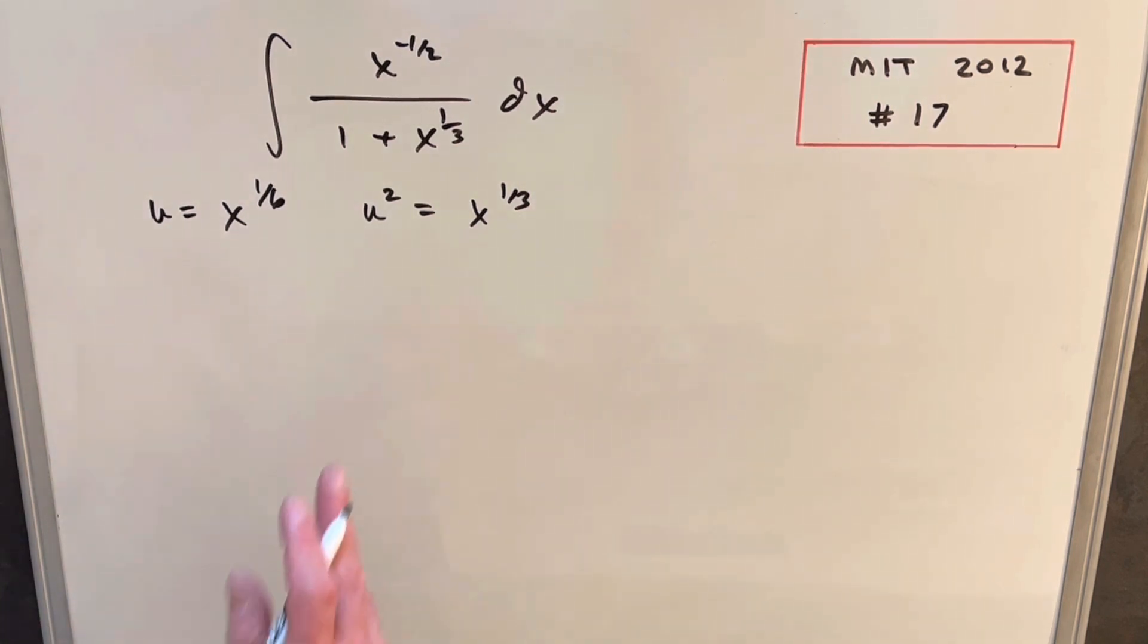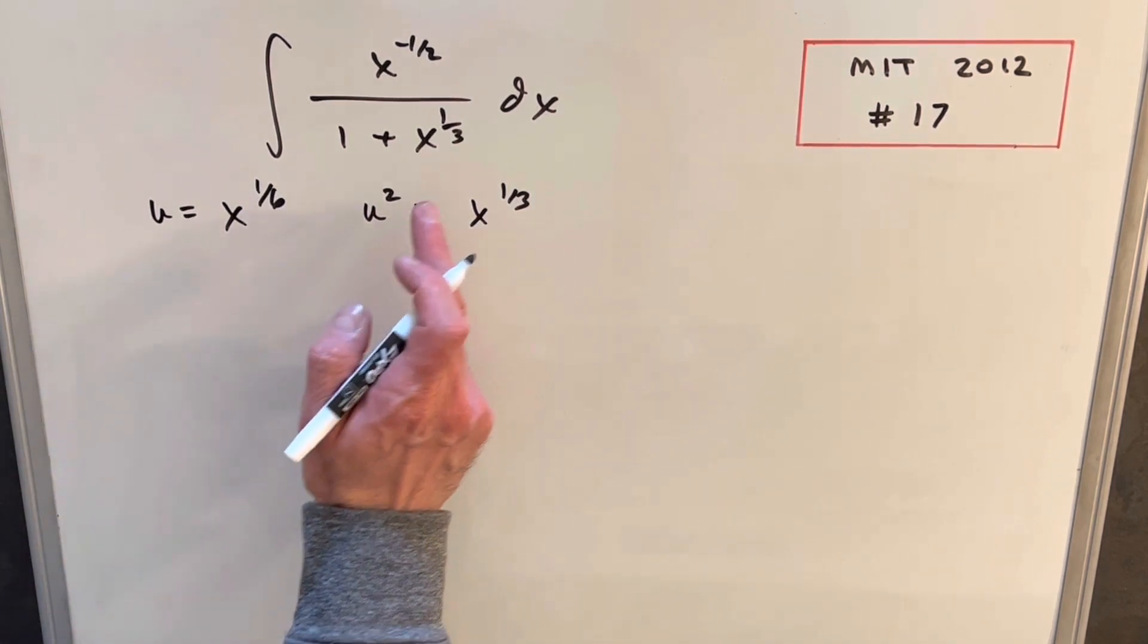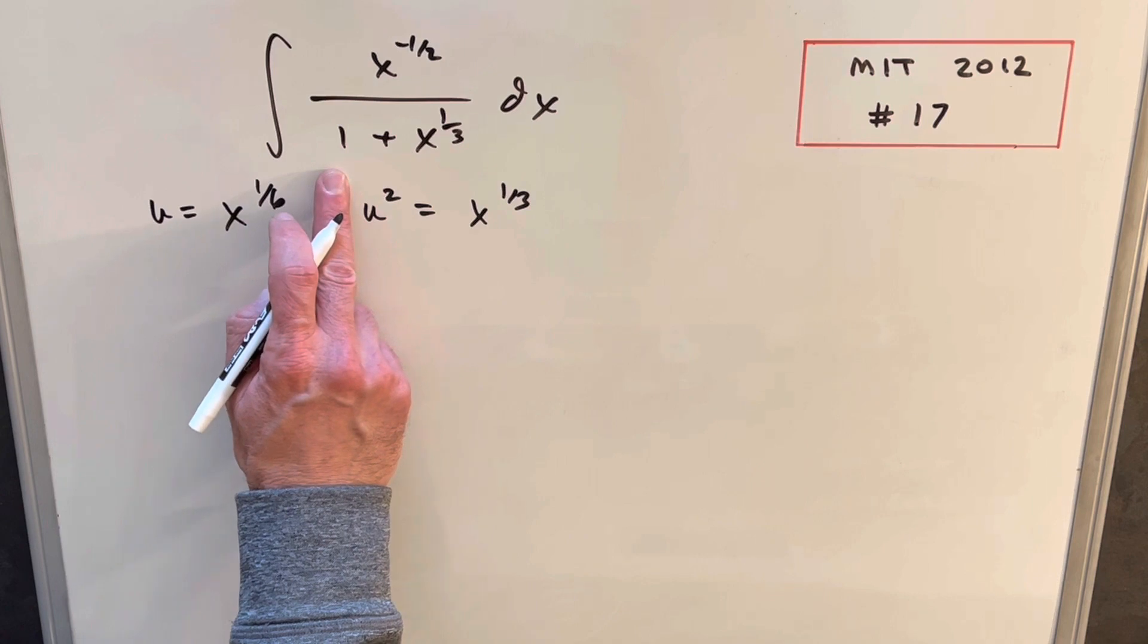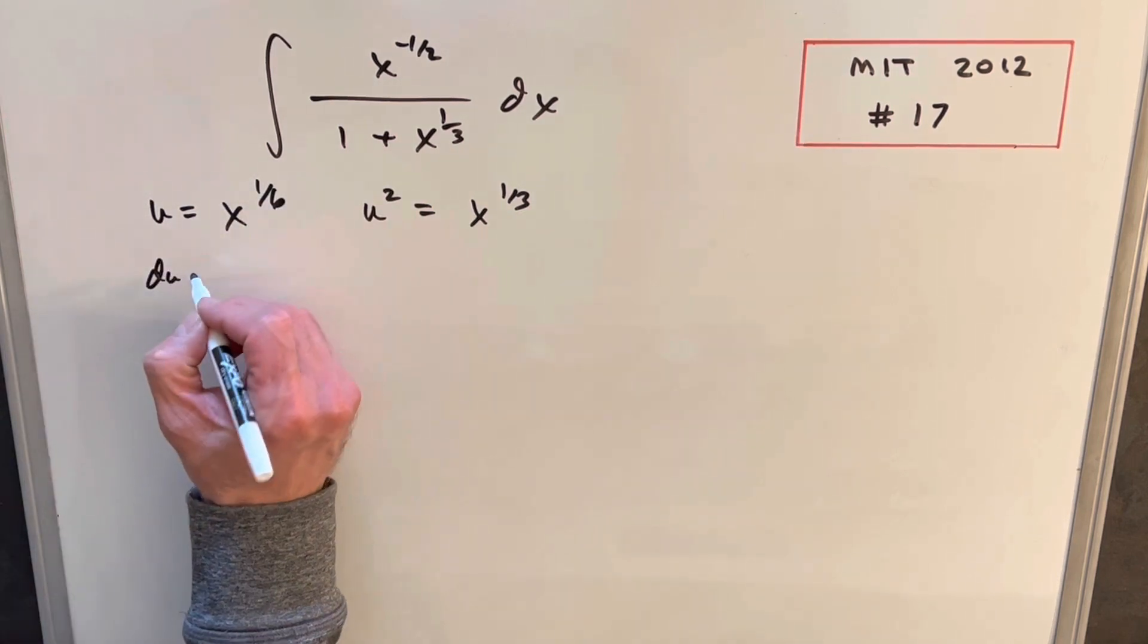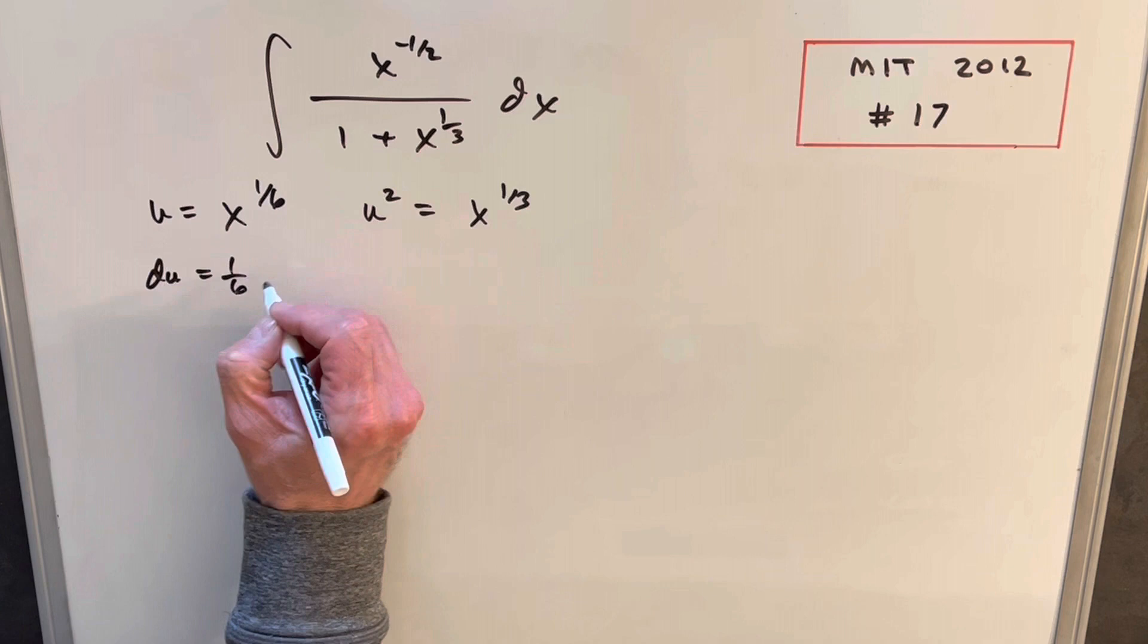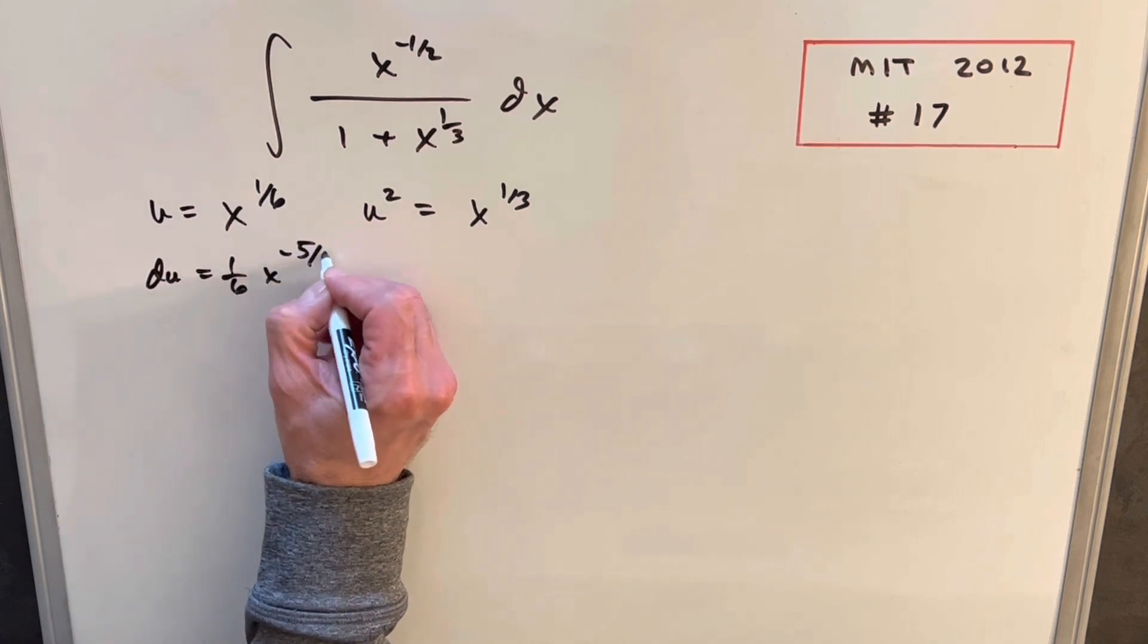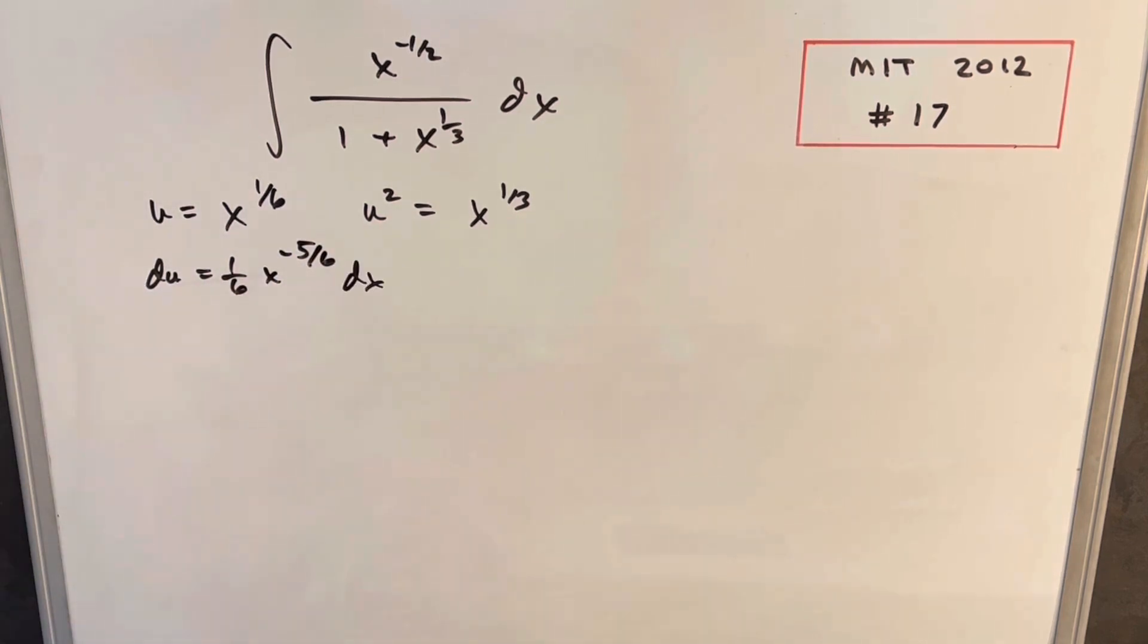That's kind of going in the direction of like an arctan integral. We're now in the denominator here, we're going to have 1 plus u squared. For our du value, we're going to have 1 sixth x to the minus 5 sixth. And that definitely doesn't look perfect. It's not matching our numerator for sure. So it's going to be a little more complicated than that.